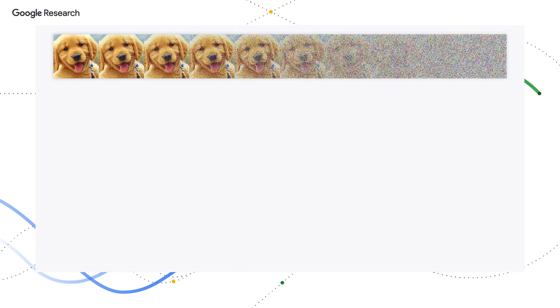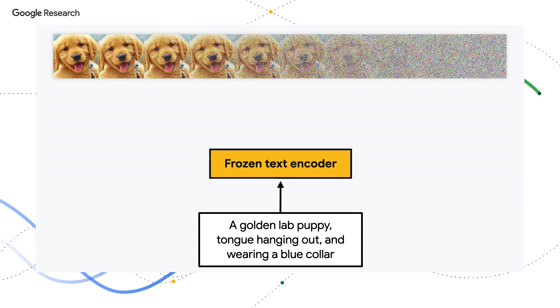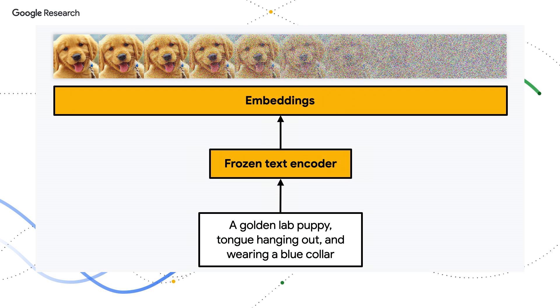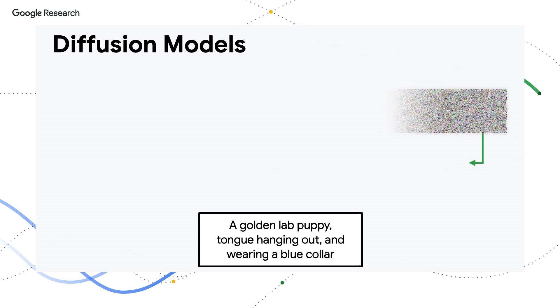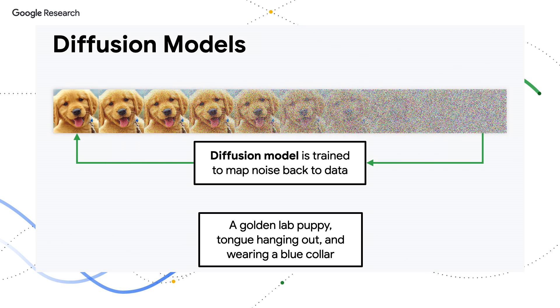Now, what if you go back to the step of creating the noisy image, but add text to this through a text encoder? Then, your noisy image has a text label attached to it, and that's the important part. Now, the denoising model can be trained to denoise the noisy image into its original representation guided by the text, and then it learns to generalize text into images.